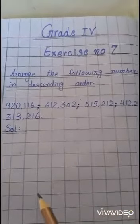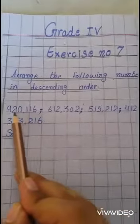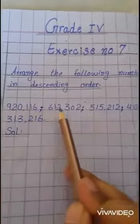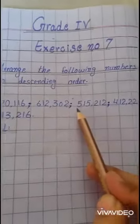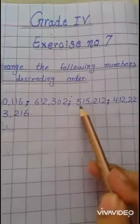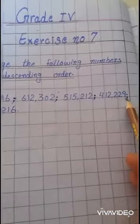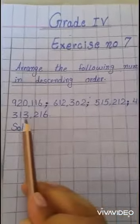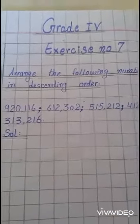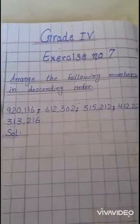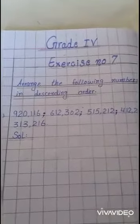For arranging these numbers in descending order, firstly we need to count the number of digits of each number. Here the number of digits are six, here it is also six, here the number of digits are six — one, two, three, four, five, six — and in this number the number of digits are also six. So the number of digits in each number is six.